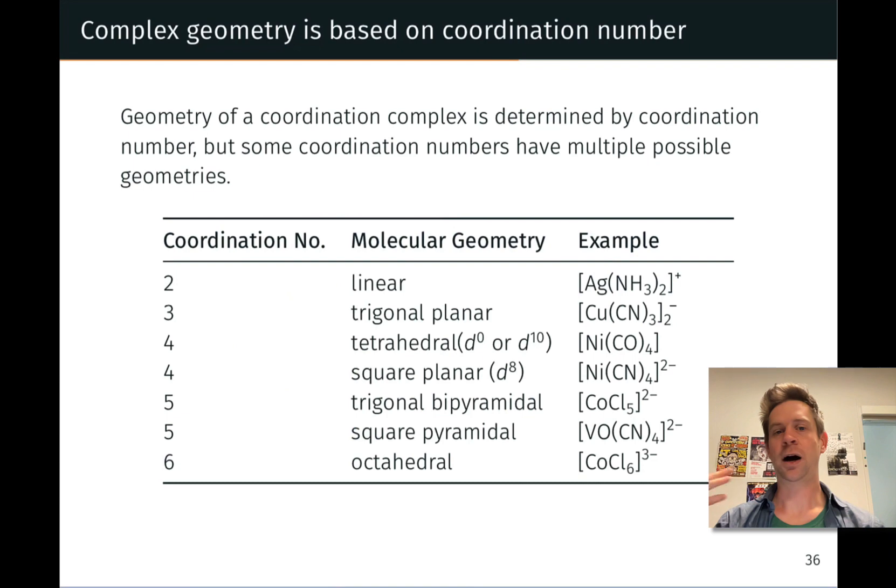In that case, we have a linear complex and this is just VSEPR theory in action. We've got two ligands, they get as far apart from each other as possible, we end up with a linear geometry. Likewise, for 3 ligands. To get these as far apart from each other as possible, that corresponds to a trigonal planar geometry with a coordination number of 3.